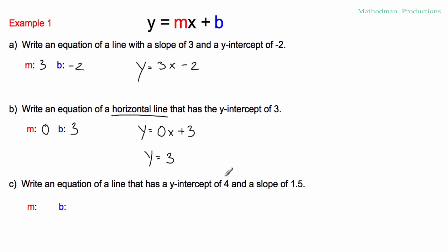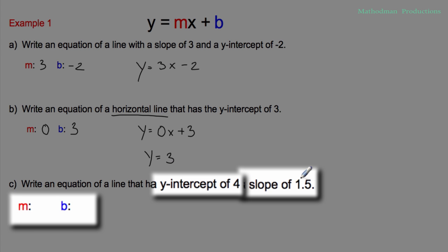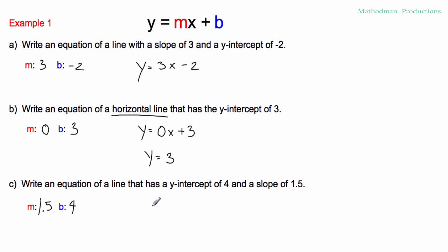The last one: write an equation of a line that has a y-intercept of four and a slope of 1.5. A lot of students get these mixed up — they just put them in the order they see them. Read it carefully: y-intercept of four is your b, and slope of 1.5 is your m. Substitute in and you get y equals 1.5x plus four.